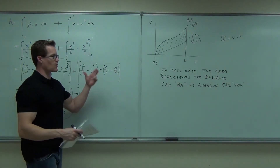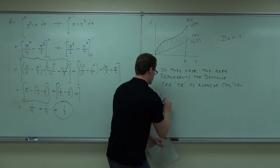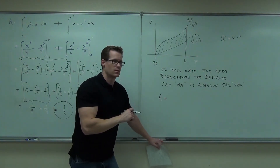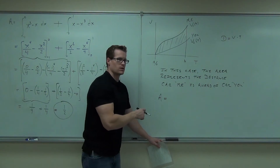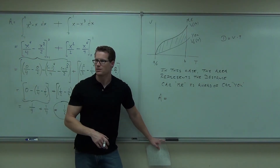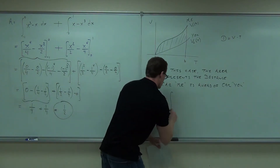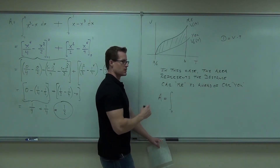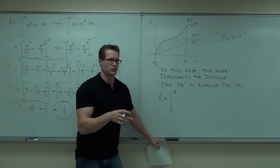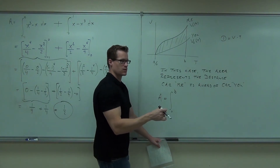In this case, the area represents the distance car me is ahead of car you. How would you find that area? Just subtract them. How would you find an area between two curves? Set it up — where to start: a, or in our case if we're at a dead stop. B is going to be the time after, say, 20 seconds. What's going to come first: V sub 1 of t or V sub 2 of t?